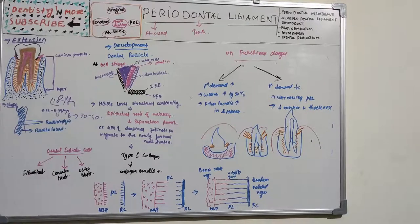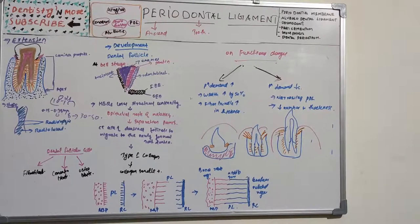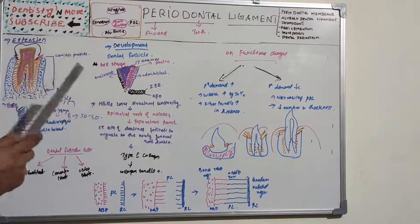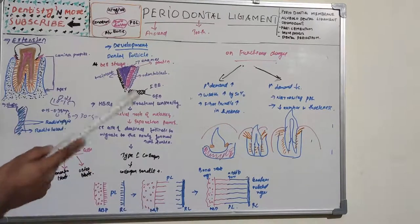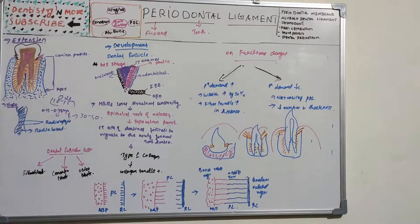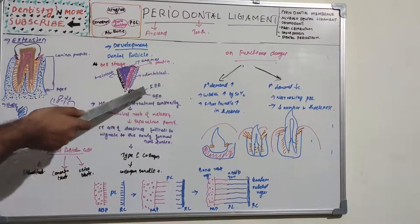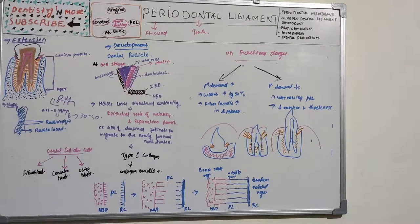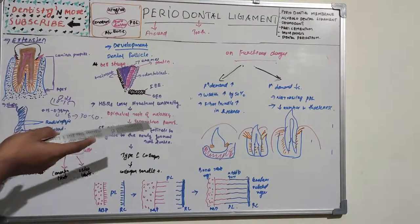The periodontal ligament develops from the dental follicle. Recall from tooth formation: bud stage, cap stage, and bell stage — dentine and pulp develop from the dental papilla, while cementum, periodontal ligament, and alveolar bone develop from the dental follicle or dental sac. Development begins with root formation prior to tooth eruption. At the later bell stage, when amelogenesis and dentinogenesis are well advanced, the internal and external laminae approximate as the stratum intermedium collapses, forming a two-layer epithelium of outer and inner enamel epithelium.